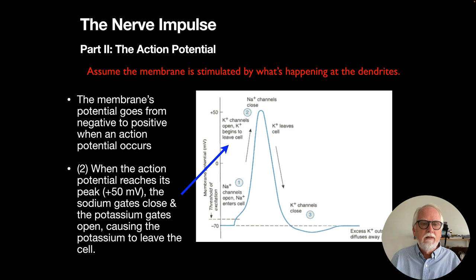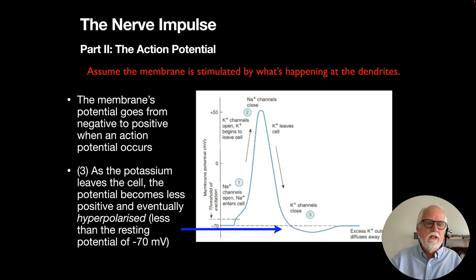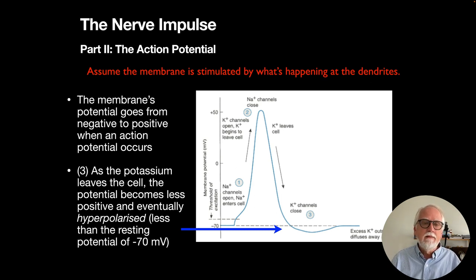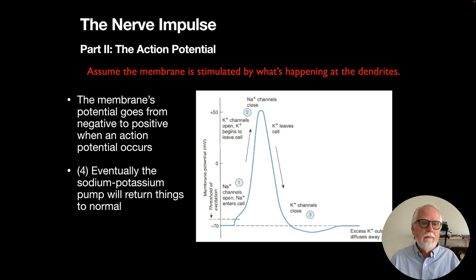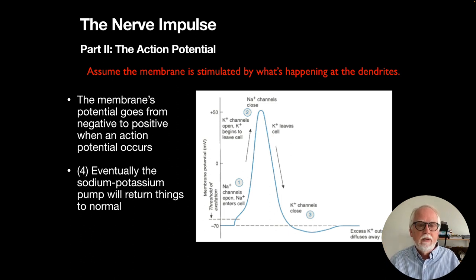Then the sodium gates close and the potassium gates open, causing potassium to leave the cell as sodium rushes in. After reaching that peak, as potassium leaves, the potential becomes less positive and eventually hyperpolarized — going below the original minus 70 millivolts. With potassium outside and sodium inside, the sodium-potassium pump then lets potassium back in while pumping sodium out, returning to the resting potential of minus 70 millivolts.